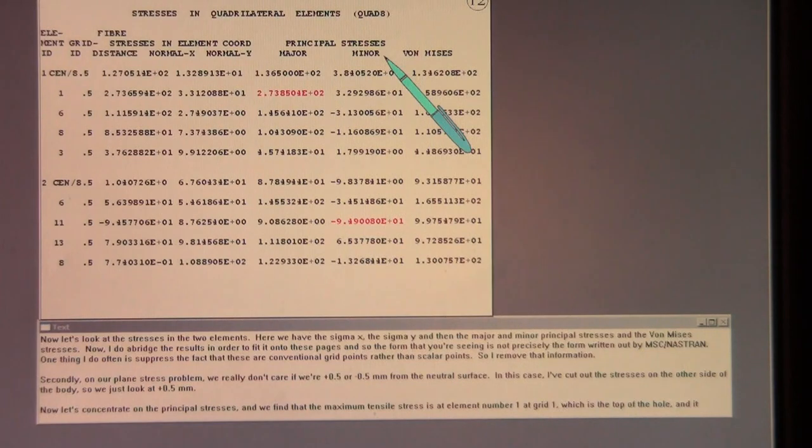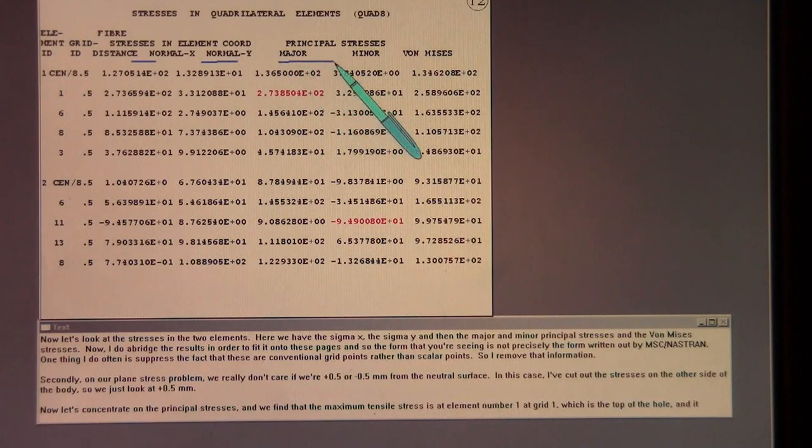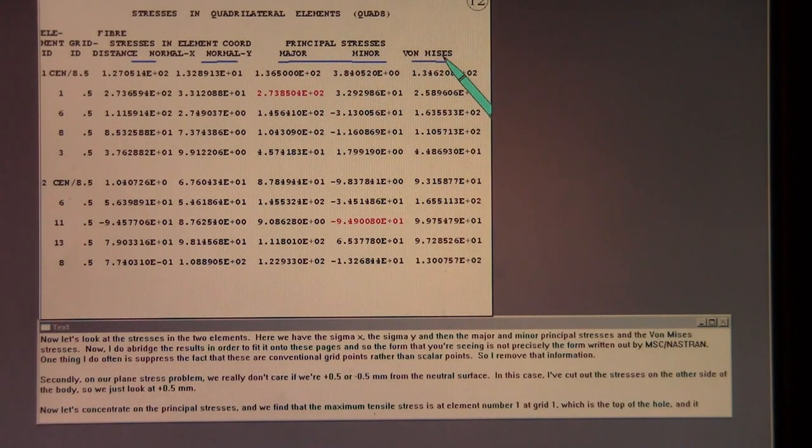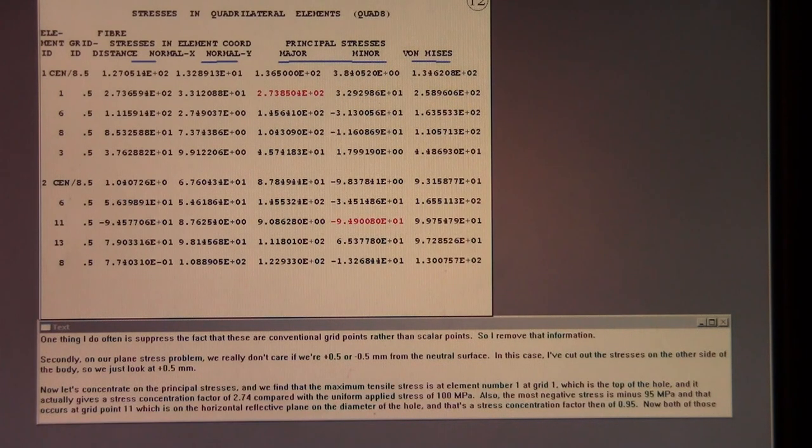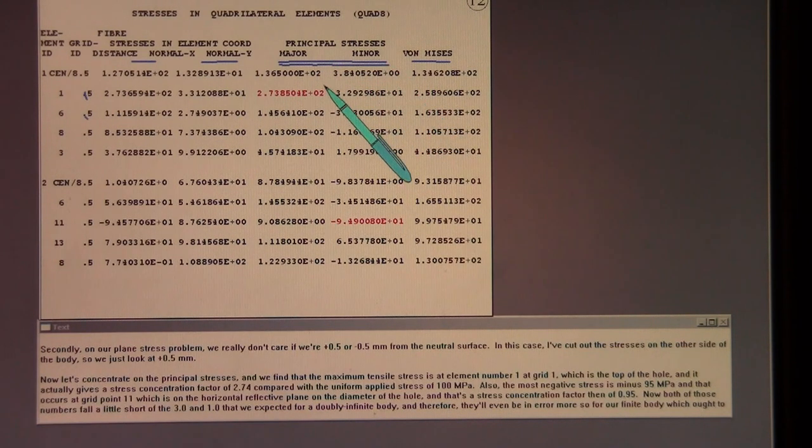Now let's look at the stresses in the two elements. Here we have the sigma X, the sigma Y, and then the major and minor principal stresses, and the von Mises stresses. Now I do abridge the results in order to fit it onto these pages. And so the form you're seeing is not precisely the form written out by MSC Nastran. One thing I do often is suppress the fact that these are conventional grid points rather than scalar points. So I remove that information. Secondly, on our plane stress problem, we really don't care if we're plus 0.5 or minus 0.5 millimeters from the neutral surface. In this case, I've cut out the stresses on the other side of the body. So we just look at plus 0.5 millimeters.